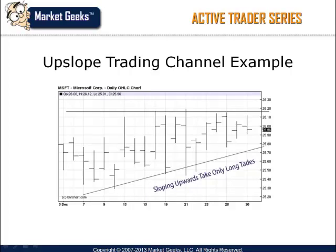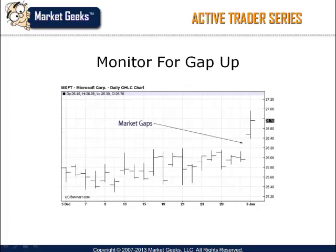Here is an example of what I mean. In this particular example, Microsoft is trading in a trading range that lasts for over 10 days. The slope is going upwards so I will only look for trades going up. The second step is to wait for a gap going up. Remember, you want to ignore all trades going short if your slope is upwards.